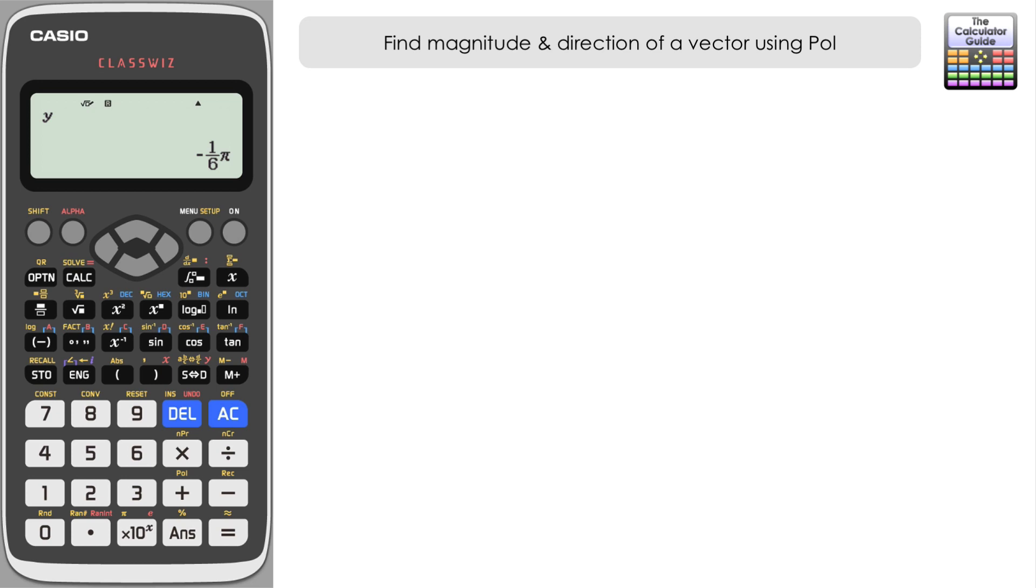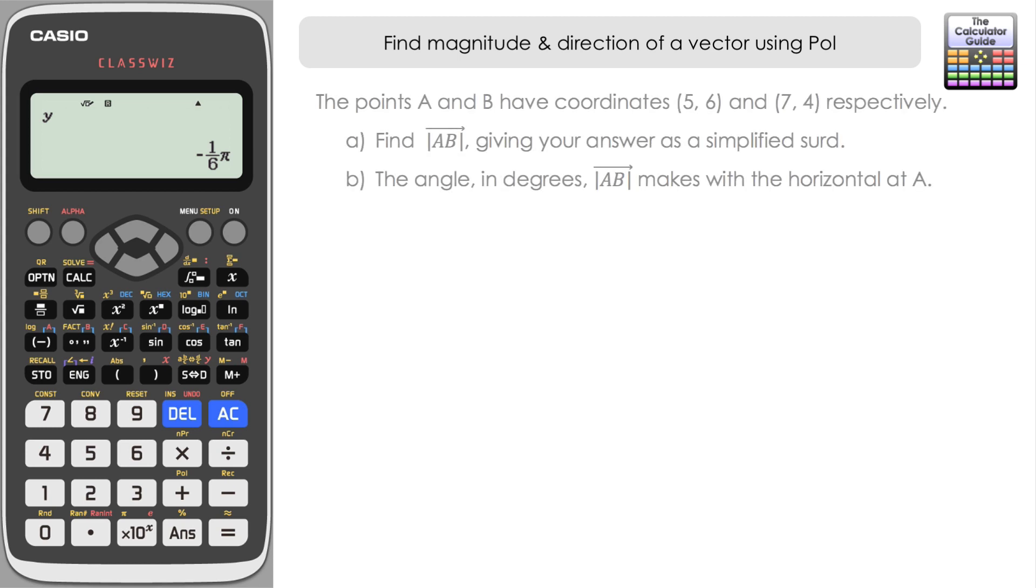Let's have a look at a slightly more involved question this time looking at position vectors and doing some coordinate geometry with them. So we've got the points A and B have coordinates five six and seven four respectively and we've got to find AB giving your answer as a simplified surd. So this time we are after specifically the surd answer, the exact answer for that part. And then b, the angle in degrees, so we're back to degrees, that the vector AB makes with the horizontal at A.